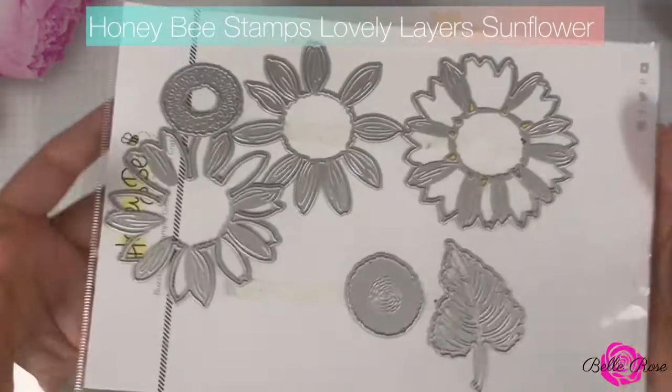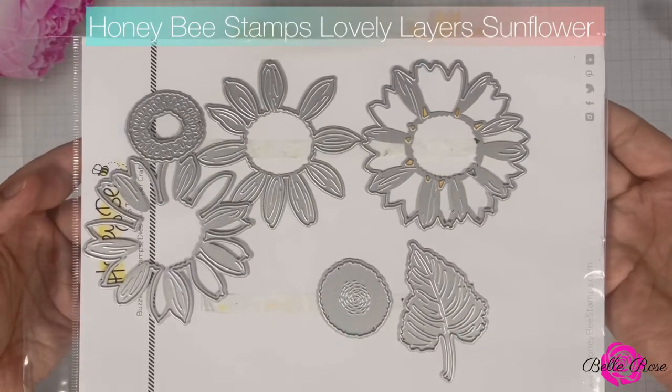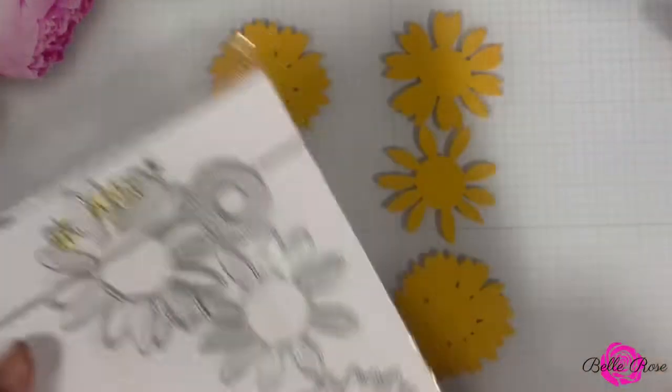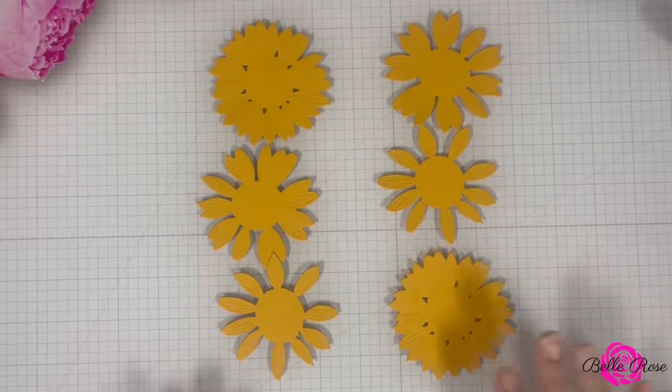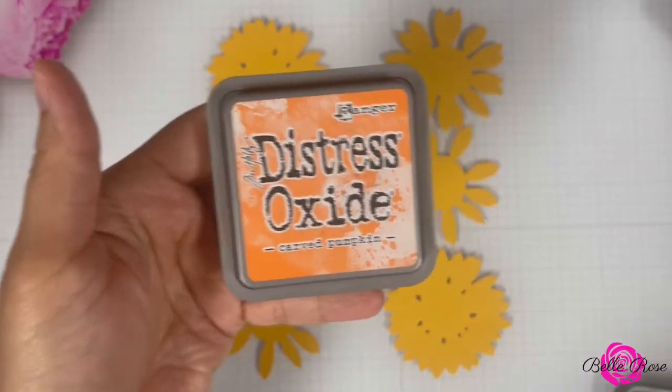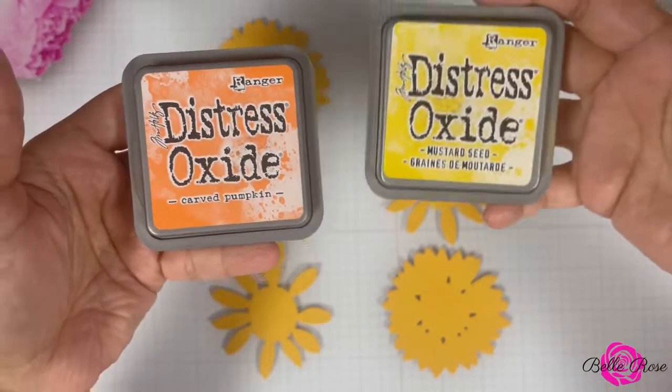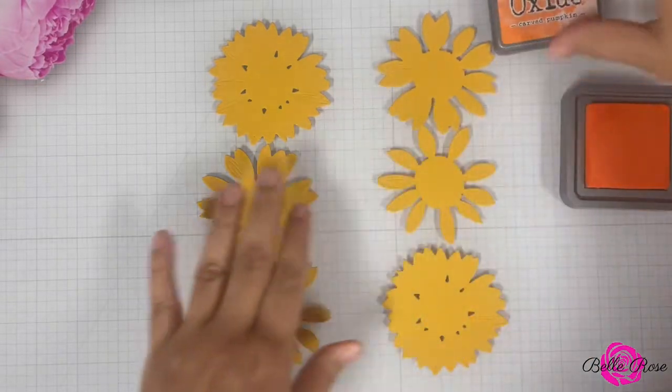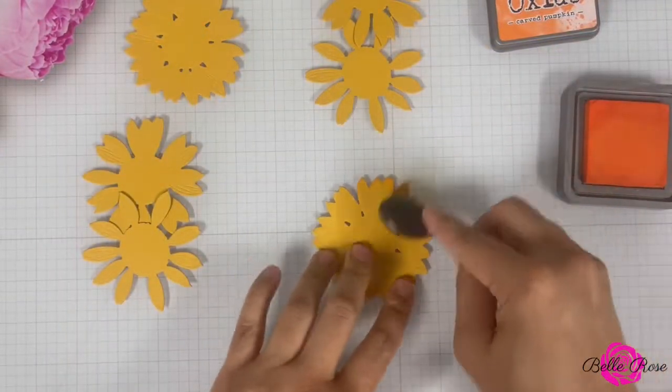Next, I'm going to bring in Honey Bee Stamp's Lovely Layers Sunflower Die Set. I did die cut the layers for the sunflowers off camera. And of course, I'm going to bring back in Distress Oxide's Carved Pumpkin and Mustard Seed. Using my blending brush, I'm going to add some shading to the layers.